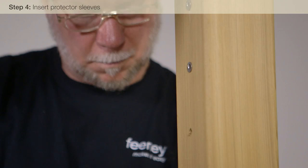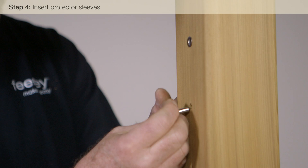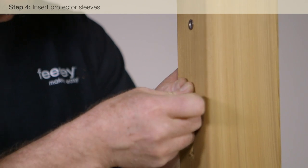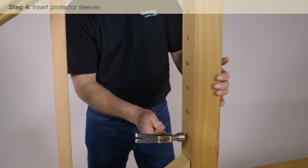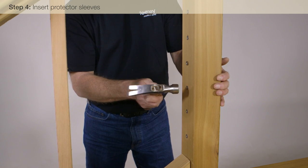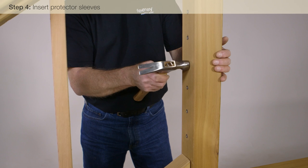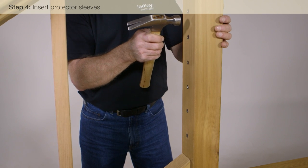Insert protector sleeves in level holes drilled for quick connect fittings and any other posts where the cable transitions in a bend. Gently tap the protector sleeves in until they are flush. Protector sleeves prevent abrasion on the wood surface once the cables are tensioned.